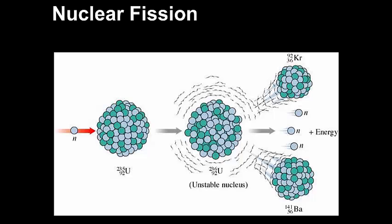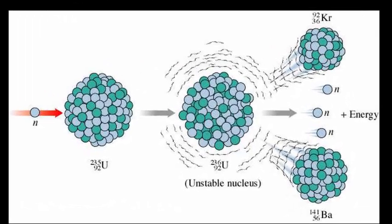Nuclear fission is something that happens, for example, in nuclear power plants, where you have an isotope of uranium, in this case uranium-235.